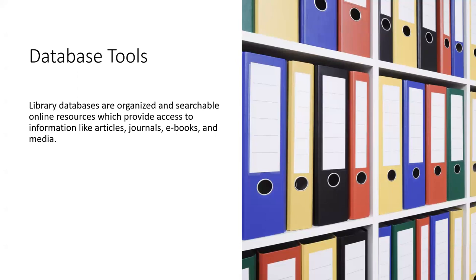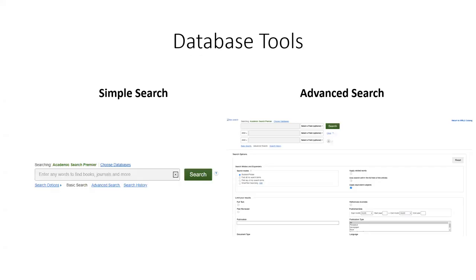Within these databases, there are two different kinds of search. Simple search basically looks like a Google search bar and it's a great way to start — just drop in your keywords, and some databases will even auto-populate with recommendations. There's also advanced search, which guides you through multiple fields, checkboxes, and filters to provide you more exact results to start with. What you choose to start with depends on how you like to search — you can't go wrong either way.